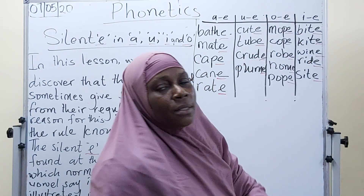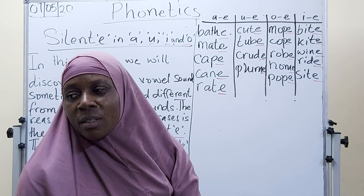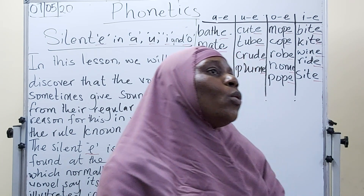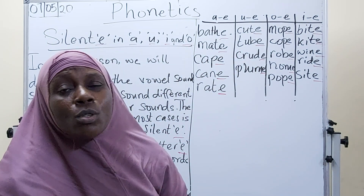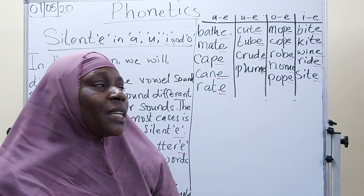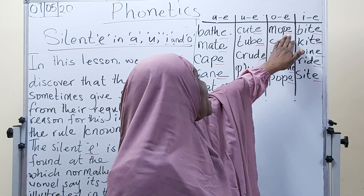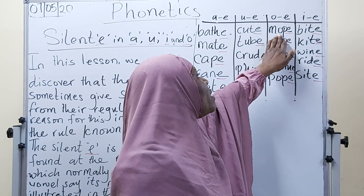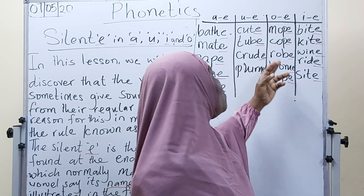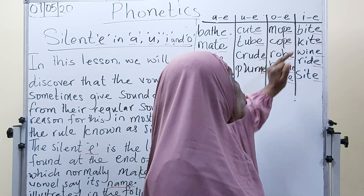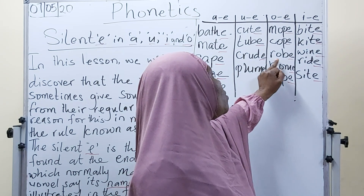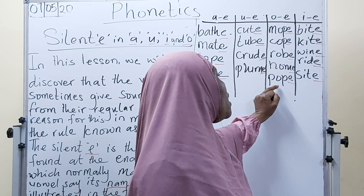Now let's look at O, as the silent E affects the letter O. The letter O sounds 'o'. But when there is a letter E at the end of the word, this O will change to its name. Therefore we are going to sound this as 'moe', this will be 'coe', this will be 'roe', 'hoe', and 'poe'.